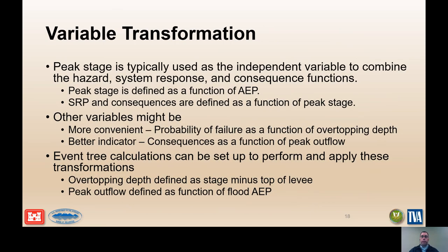Peak stage is typically used as the independent variable to combine the hazard, system response, and consequence functions. Peak stage is defined as a function of annual exceedance probability. The system response probability and consequences are often defined as a function of peak stage, but other variables may be more appropriate. For example, an overtopping erosion potential failure mode may be a function of the overtopping depth, or a stilling basin erosion potential failure mode may be a function of peak outflow. Similarly, consequences may be a function of peak outflow. The event tree calculations can be set up to perform and apply these variable transformations.